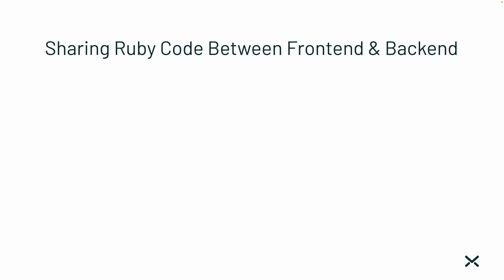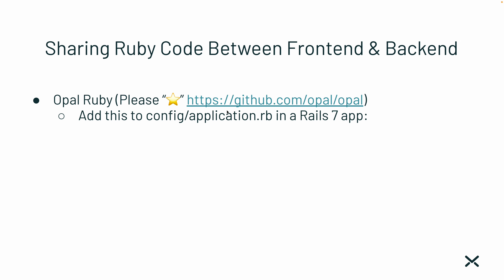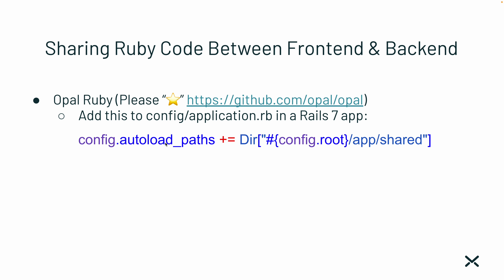That's it — that's how you can get started. Next, we'll move into a very interesting topic: how do you share Ruby code between the front end and the back end? That's a very big selling point of using Ruby on the front end. Let's start with Opal, because the Opal way is a lot simpler. In the Rails app, add this to config/application.rb — add to your autoload paths the directory app/shared. Usually you have app/models, app/controllers, app/views. We're adding app/shared, which will contain any Ruby files you want to share between the back end and front end.